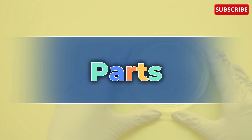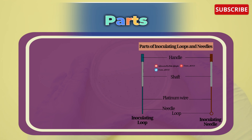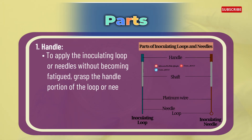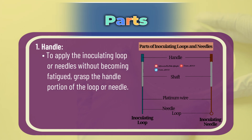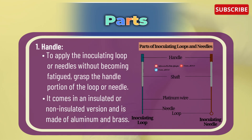Now let's get to know the parts of inoculating loops and needles with the help of this diagram. We have the handle, used to apply the inoculating loop or needles without fatigue. The handle portion of the loop or needle comes in an insulated or non-insulated version and is made of aluminum or brass, with an eight-inch grip.